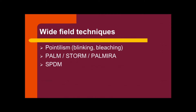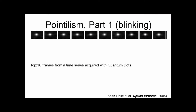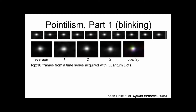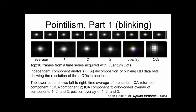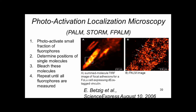Other techniques rely on wide-field imaging using blinking, photo-activation, photo-switching, or spectral position determination microscopy. The very first of these used quantum dots. In a time series of quantum dots you cannot tell how many there are from the average image alone. By analyzing the data with independent component analysis, characteristic blinking events reveal three individual quantum dots, which can be colored and overlaid. The centers of intensity are very close together but can be resolved using this blinking-based technique.